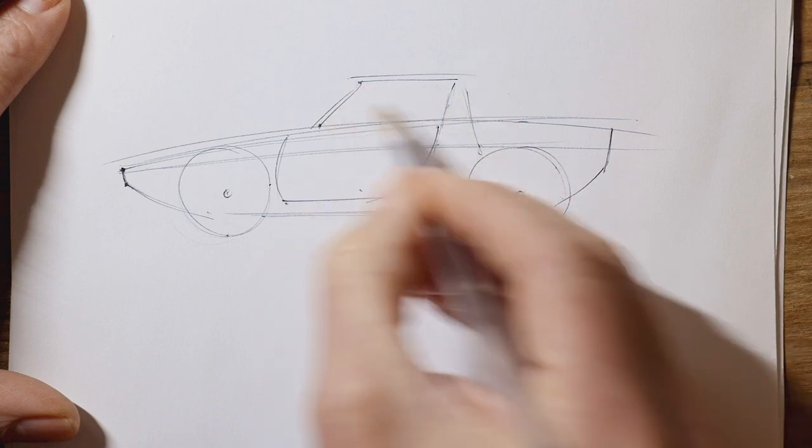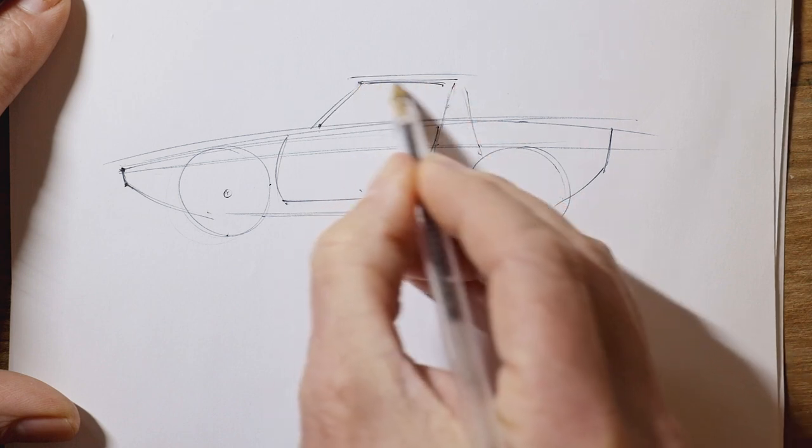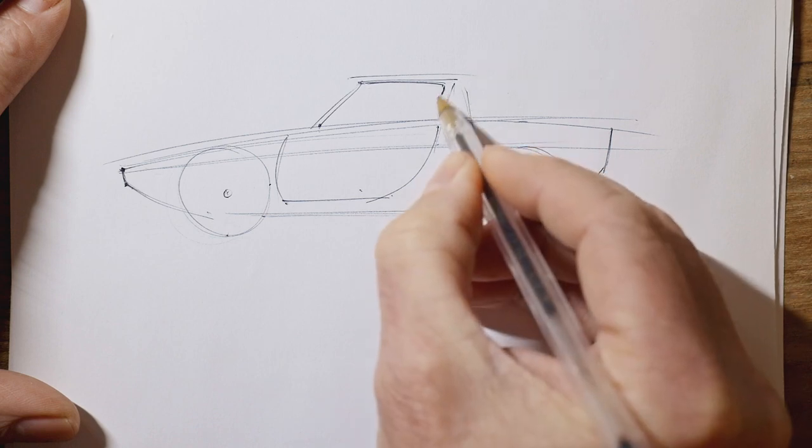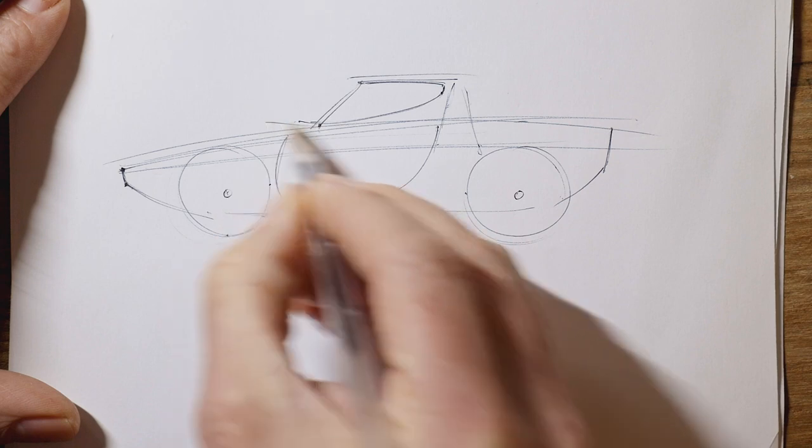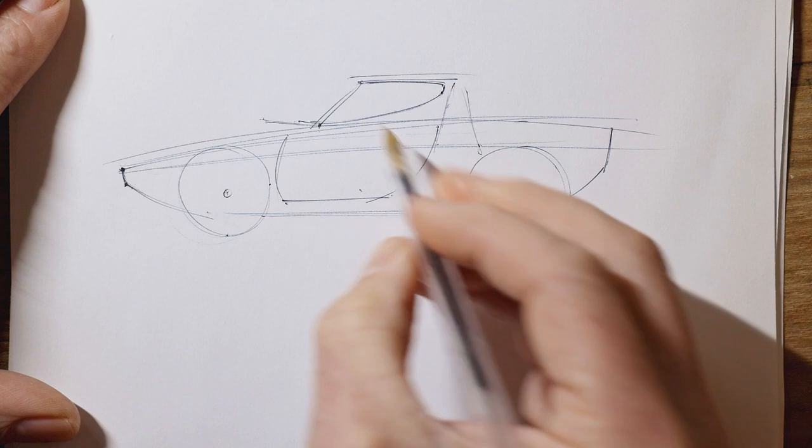Now for the side window, you need to just slope downward slightly, add a little corner here. And then from that point, swing down to go through the bottom of the pillar. That gives you that classic Stratos side window shape.